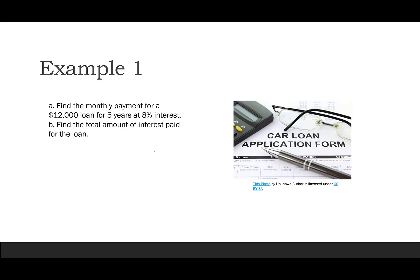Example one: find the monthly payment for a $12,000 loan for five years at 8% interest, then find the total amount of interest paid. This is a car loan scenario. The $12,000 is our P, five years is our T, 8% is our R, and monthly payments means N equals 12.